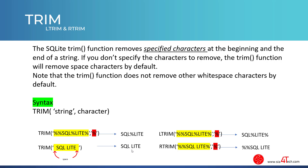We also have LTrim and RTrim, which are similar to Trim. LTrim removes only the specified character at the beginning of the string. For example, with the string 'SQLite' that has percentage symbols at the beginning, end, and in between — when we specify the percentage symbol, it removes only those at the beginning. The RTrim removes the specified characters at the end of the string, and the result will be like this.